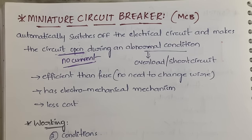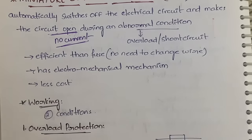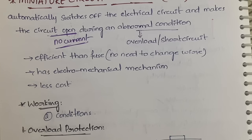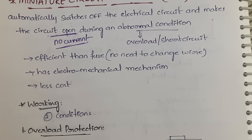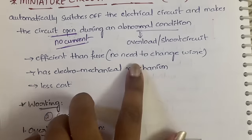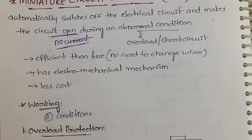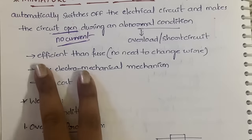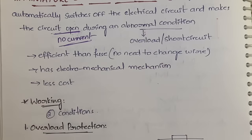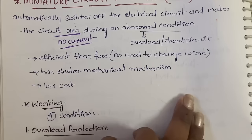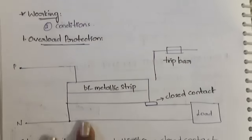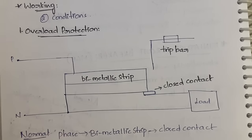In order to protect our devices we use MCB, which will automatically turn off. MCB is more efficient than a fuse because once a fuse wire is damaged by overload current it melts and must be replaced with a new wire. With MCB, the switch automatically trips; you just turn it back on without changing any wire. It has an electromechanical mechanism and is of low cost.